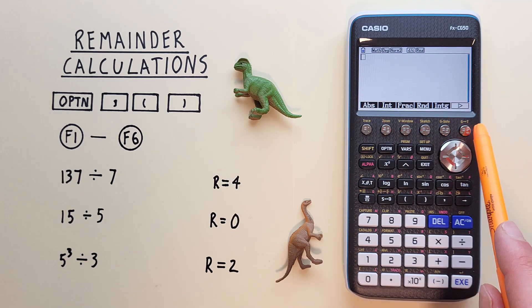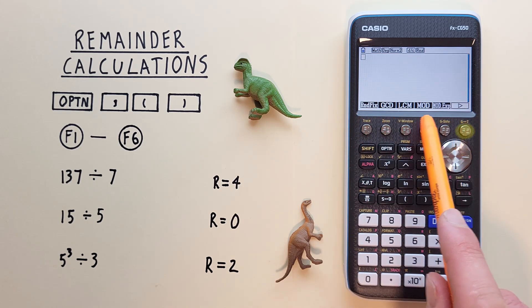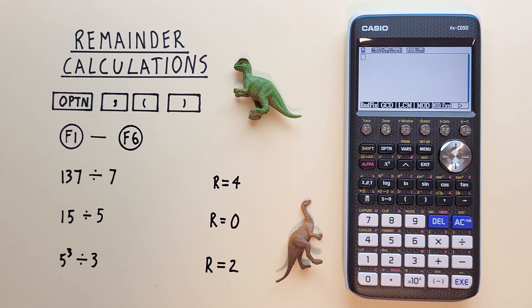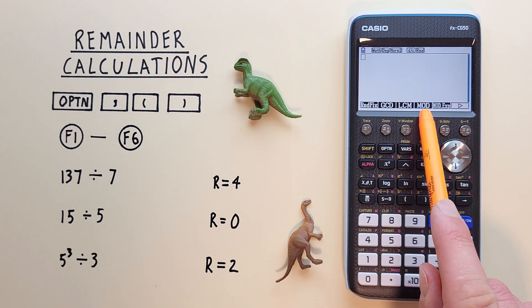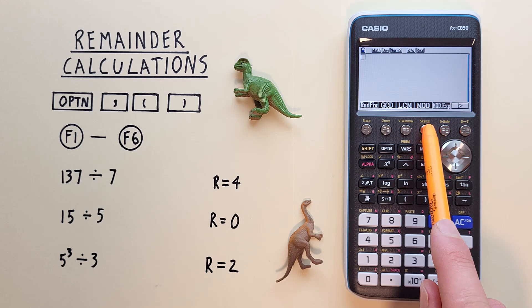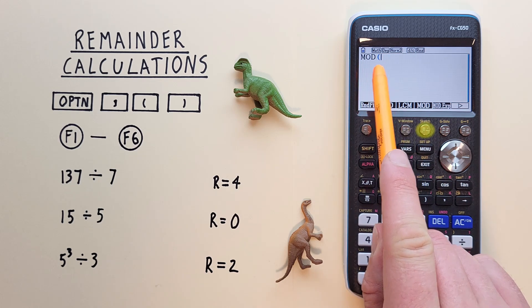And then hit F6 to go to this menu here. Now we see F4 mod or modulus. So we hit that and we see mod on our screen.